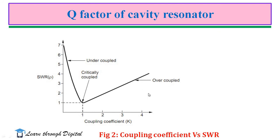We observe a plot of SWR versus coupling coefficient. The region where K < 1 is under coupled; K = 1 is critical coupling; and the region where K >> 1 is over coupled. For a critically coupled system, the resonator and generator are perfectly matched, therefore K = 1.